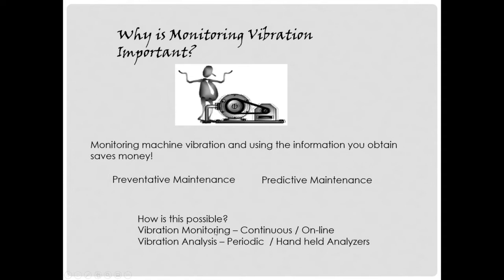We break vibration work into two categories. The first is vibration monitoring, which is a continuous measurement and usually uses an online type analyzer — it's always recording a value of what's going on. The second method is vibration analysis, which is typically a periodic activity, often done with handheld analyzers where we go and check an individual piece of equipment. Some things like exhaust fans won't have online analyzers, whereas gas compressors would. There are different applications depending on the potential severity of unexpected vibrations.